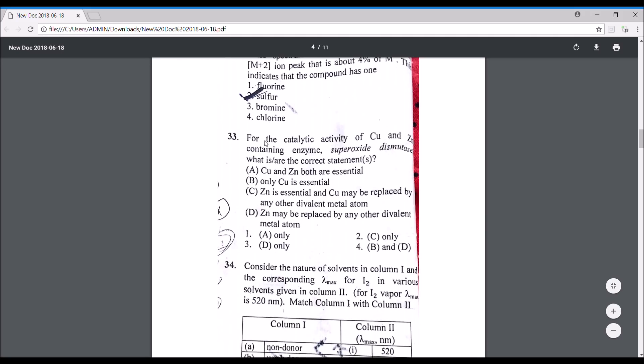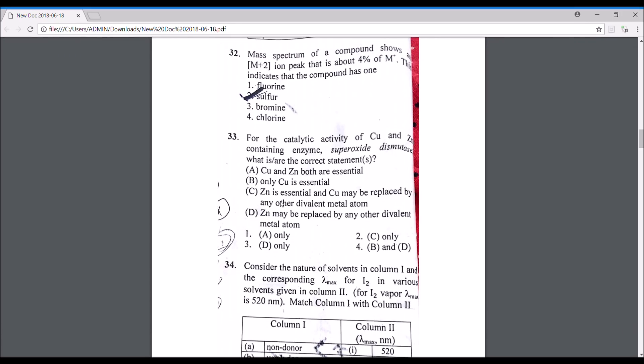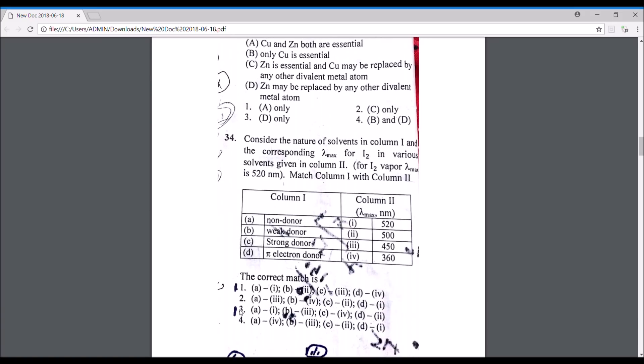For the catalytic activity of copper and zinc containing enzyme superoxide dismutase, which are the correct statements? Basically, it has been found that if we replace zinc or even if zinc is not present in the superoxide dismutase, it still shows good activity. So zinc may be replaced by any other divalent metal atom. This statement seems to be correct. I've read a research paper which says that even without zinc, the superoxide dismutase enzyme functions well. So D is definitely there, and I think copper is essential for the activity, so the correct answer would be B and D, that is option number four.